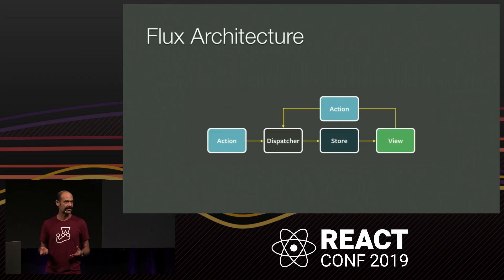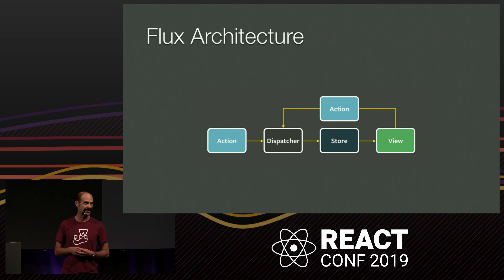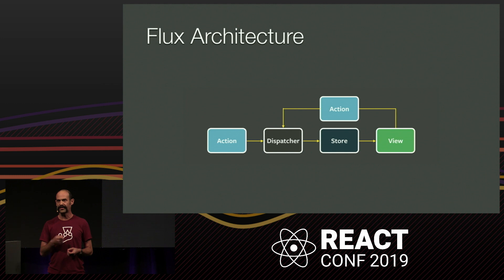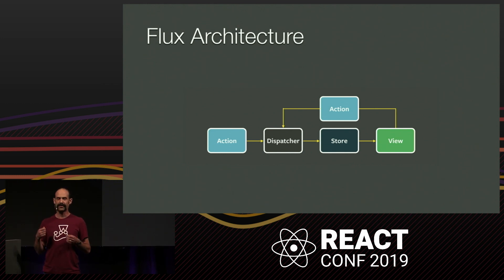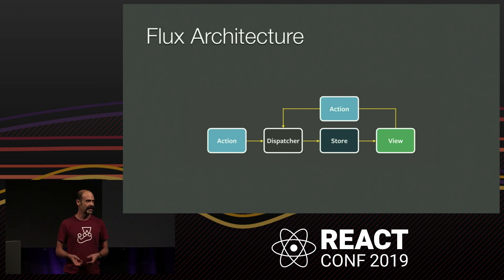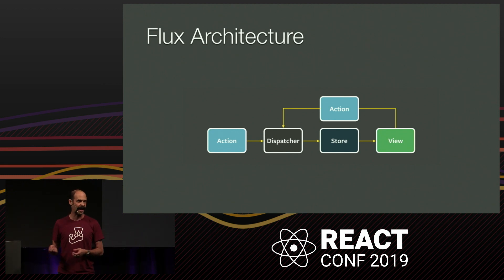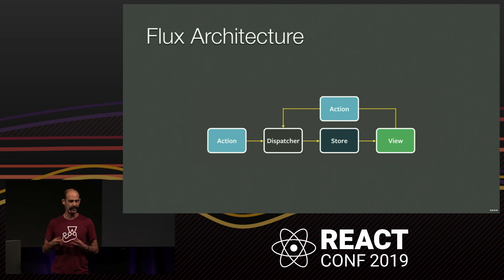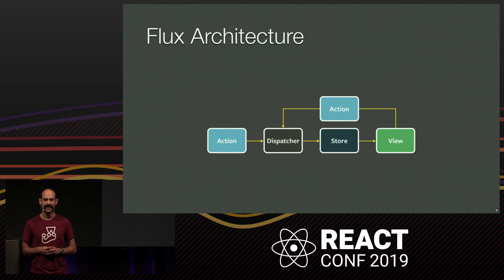We eventually solved this with a new architecture that came to be known as Flux. For the purposes of this talk, I want to focus on the way that Flux forces us to capture every state change in our app as an action and flow those actions in a single direction through our application. Unidirectional data flow — we all know about this. It's the pattern that comes with React.